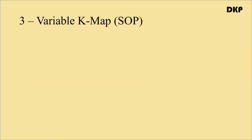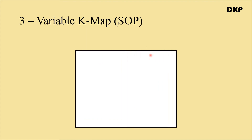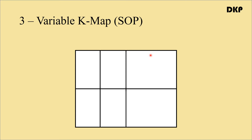Let us see how to map a SOP expression in a three variable K-map. First, let us draw the three variable K-map. It consists of two to the power of three, which equals eight cells — that is, two rows and four columns. The variables are A, B, C. We are going to place the binary number 00 for the first column. This first column denotes 00 — the first 0 denotes the complemented variable B and the second 0 denotes the complemented variable C, that is B bar C bar.